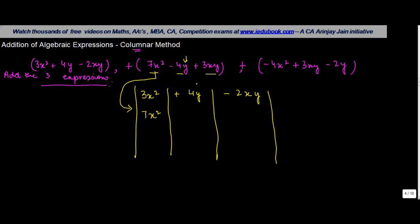So the literal is y. I take this here and I write minus 4y plus 3xy. Again, xy is here, so I write this as plus 3xy.